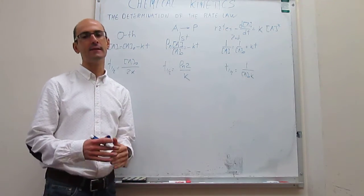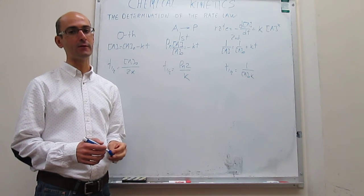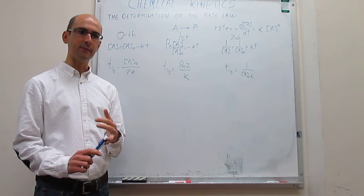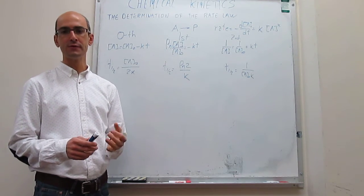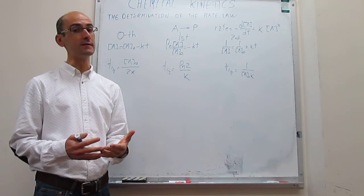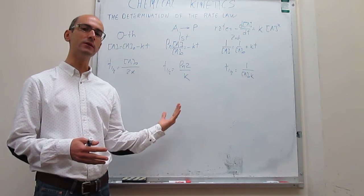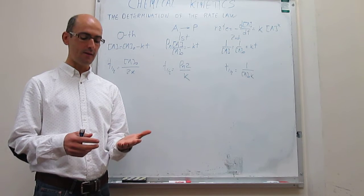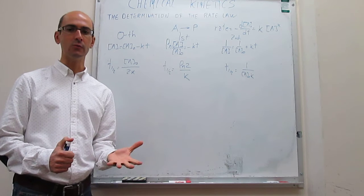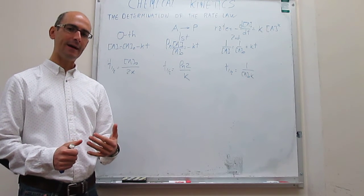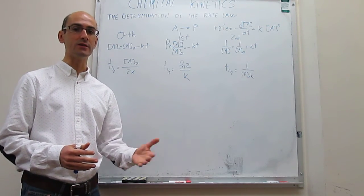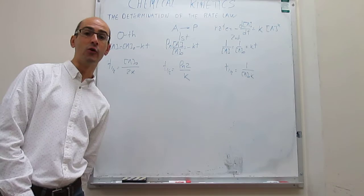Those are two methods to determine the rate law for a chemical reaction with one reagent: the integration method and the half-life method. The integration method is probably easier to use, but its applicability is not universal — it only works if the reaction is suspected to be zeroth, first, or second order. In the next video, we will see methods that are more universal and allow you to determine the rate law even if the reaction order is non-integer or negative.